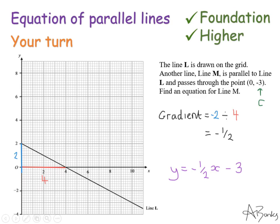Here's the full solution. So you should have that the gradient is minus 1 half. It's very crucial there that you realize this line is going down. It has a negative gradient. So it's not 1 half, it's minus 1 half. And then because it passes through the point 0 minus 3, the y-intercept must be minus 3. So the equation of the line is y equals minus 1 half x minus 3. Thank you for watching.